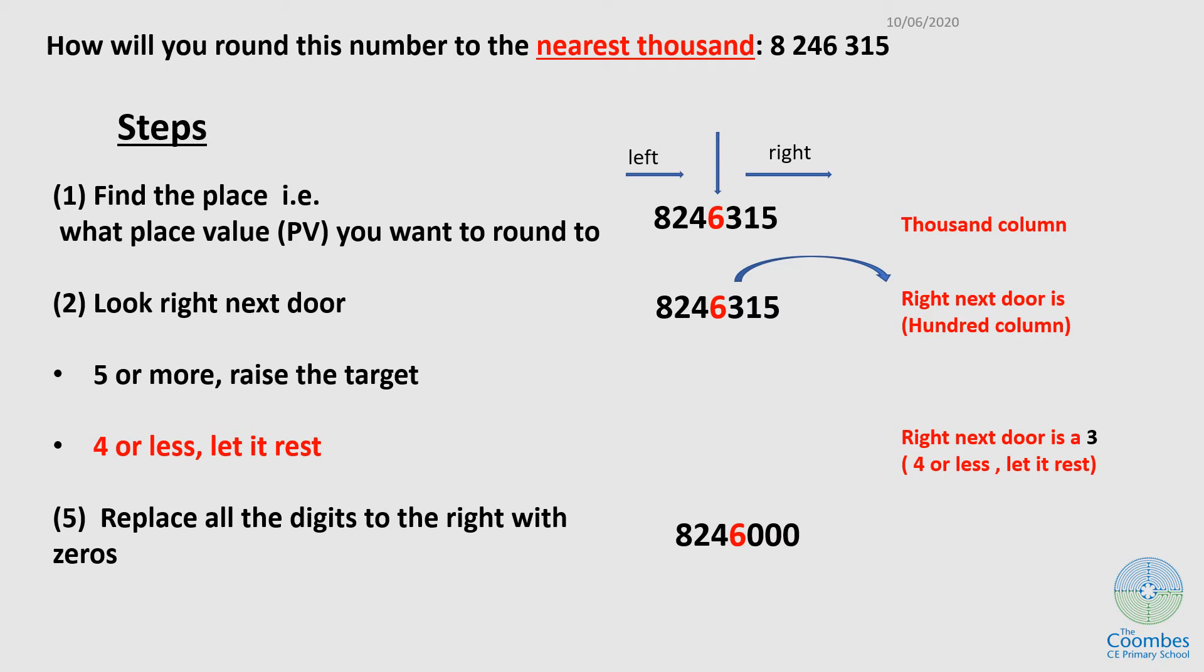How will you round this number to the nearest thousand? 8,246,315. There are some steps I want you to follow. First, find the place. The place value you want to round to. We are told that is the nearest thousand. If you look at the number, this is the unit column, that is the tenth column, that is the hundredth column, and this is the thousand. So this is the place.